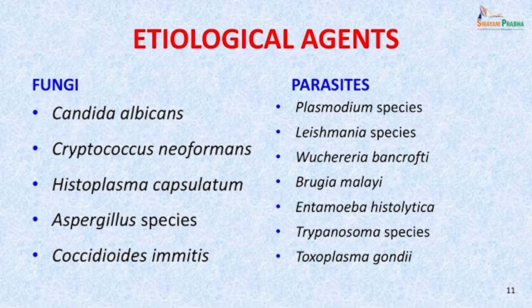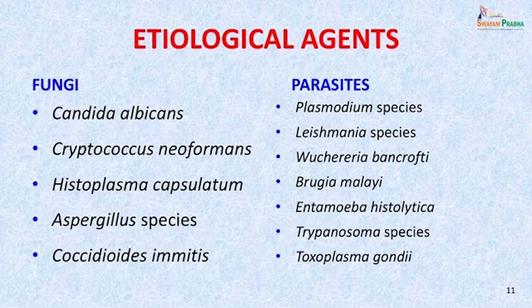The etiological agents from the fungal group are Candida albicans, Cryptococcus neoformans, Histoplasma capsulatum, Aspergillus species, and Coccidioides immitis. The common parasites presenting with PUO are Plasmodium or the malaria parasite presenting as malaria, Leishmania, Wuchereria bancrofti presenting as filaria, Brugia malayi, Entamoeba histolytica, Trypanosoma, and Toxoplasma gondii.